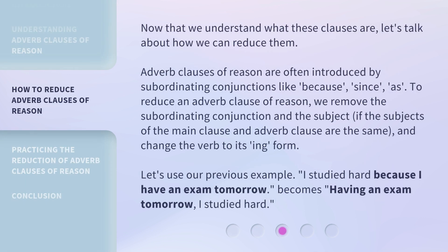Now that we understand what these clauses are, let's talk about how we can reduce them. Adverb clauses of reason are often introduced by subordinating conjunctions like because, since, and as. To reduce an adverb clause of reason, we remove the subordinating conjunction and the subject — if the subjects of the main clause and adverb clause are the same — and change the verb to its -ing form.